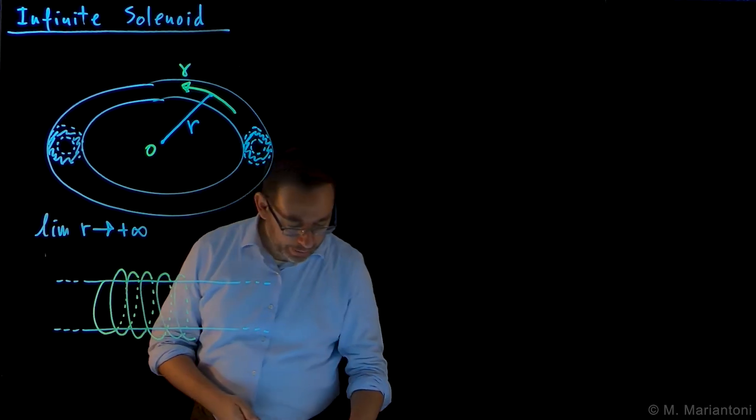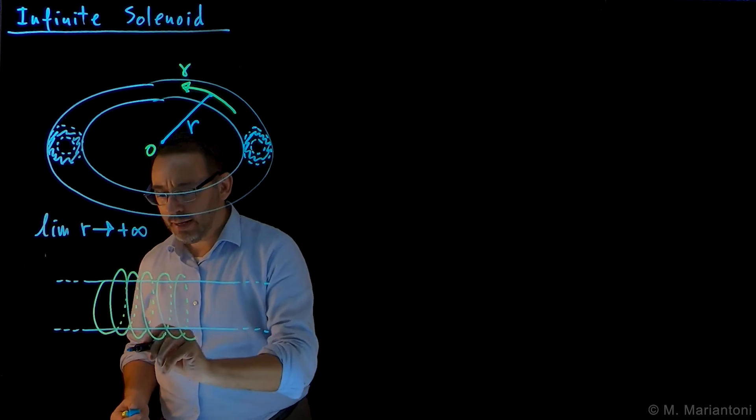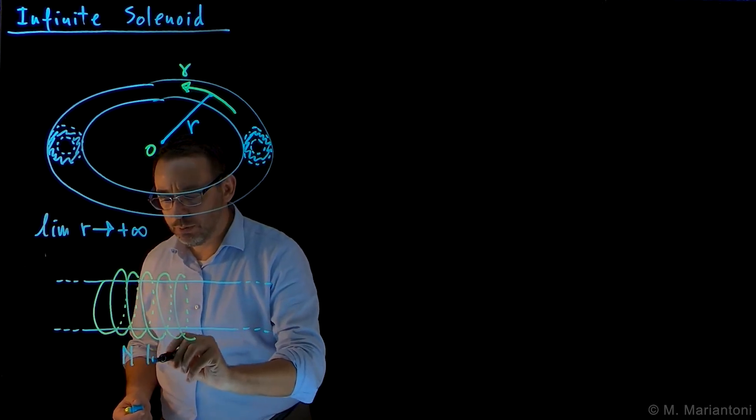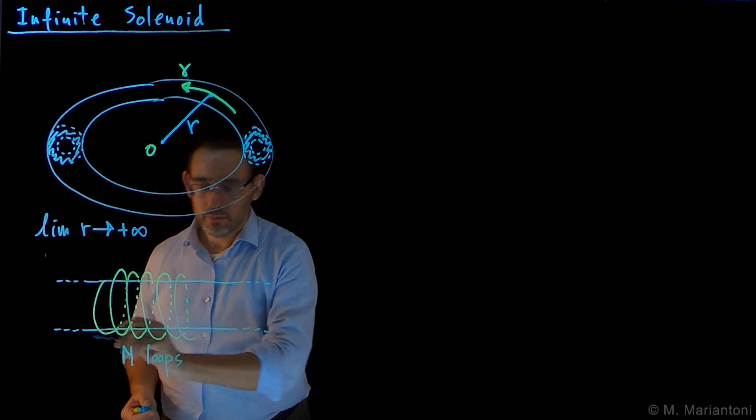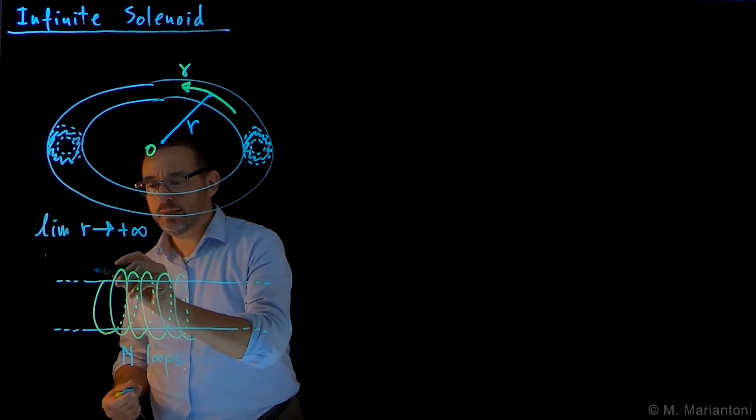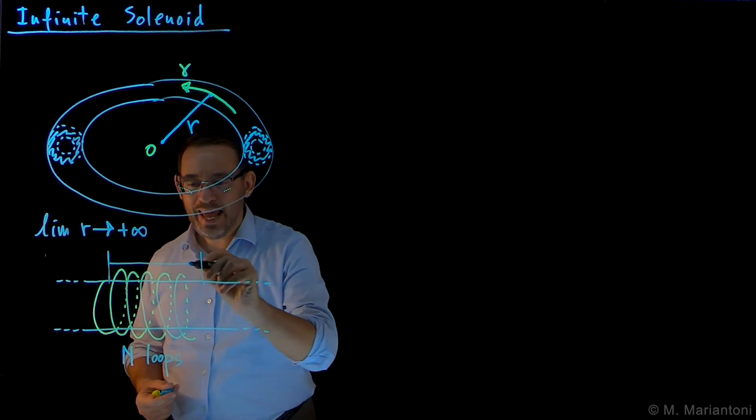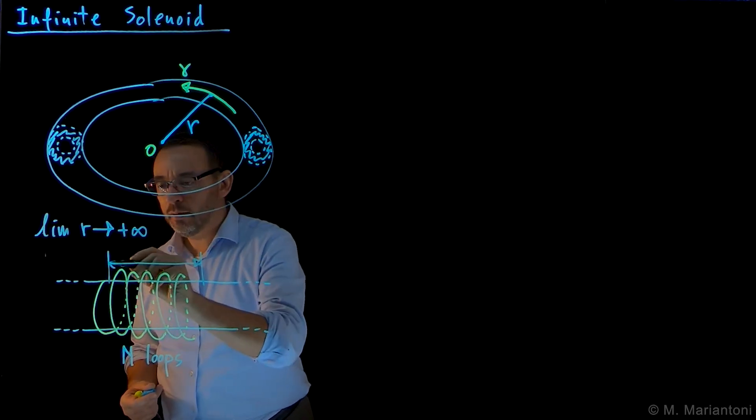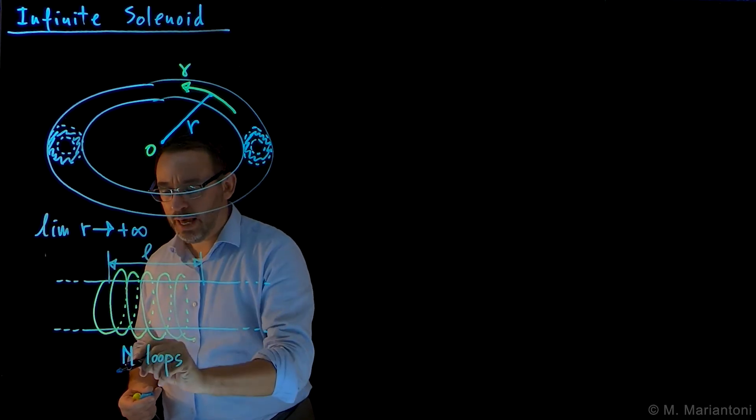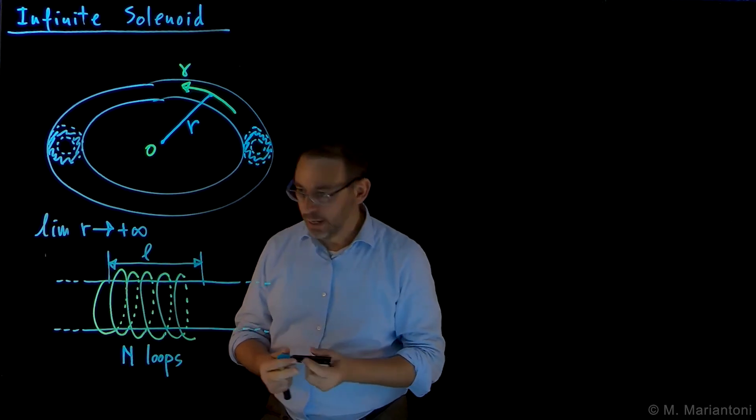with many loops. And again, we have capital N loops for a certain distance. Let's say that this one will be a distance length, small l, for the solenoid, we have N loops for this length.